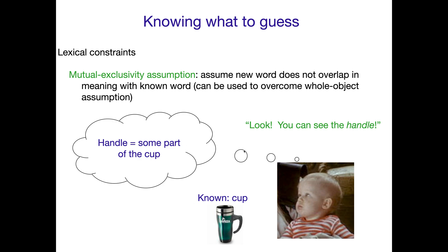So they're using mutual exclusivity to say: 'Handle cannot refer to this entire thing — maybe my first guess — because that already has a word for it. That's called cup. Therefore, mutual exclusivity says handle doesn't refer to that. Handle must mean something else.' That's a demonstration of how mutual exclusivity works to overcome a whole-object assumption for a new word.